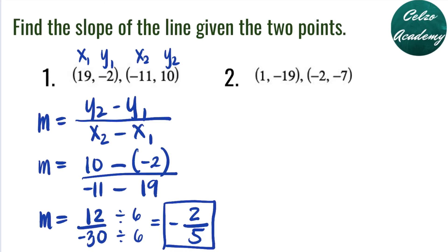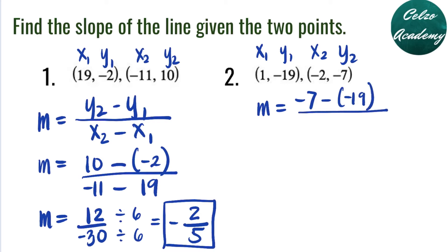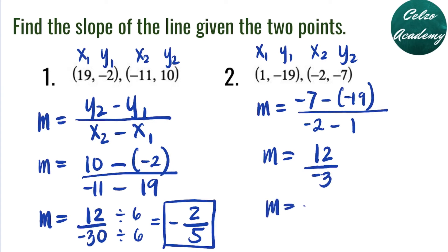Question number 2: points (1, -19) and (-2, -7). Our first pair is x1, y1; second pair is x2, y2. Plugging into the formula: negative 7 minus negative 19 over negative 2 minus 1. Negative 7 minus negative 19 is the same as negative 7 plus 19, which is 12. Negative 2 minus 1 is negative 3. Dividing 12 by negative 3, the answer is negative 4. So the slope is negative 4, or negative 4 over 1.